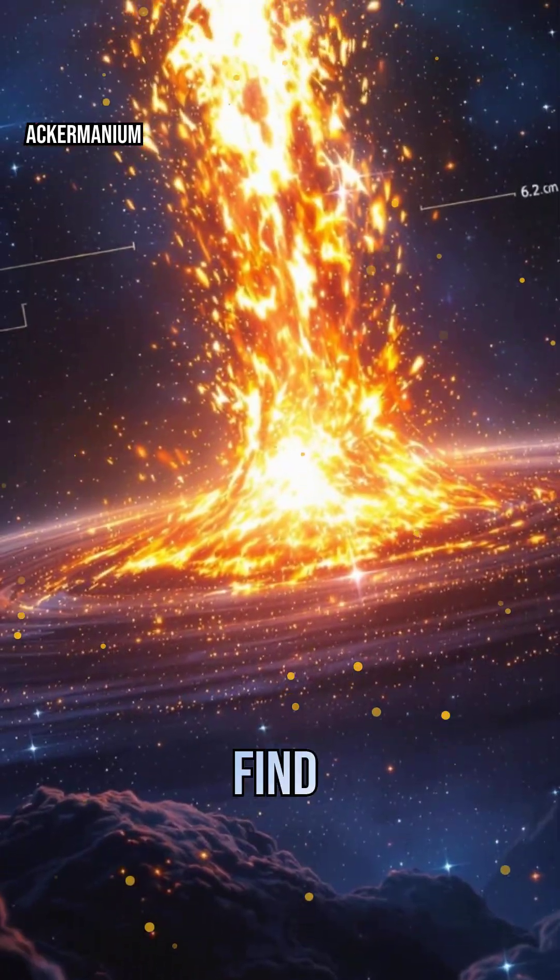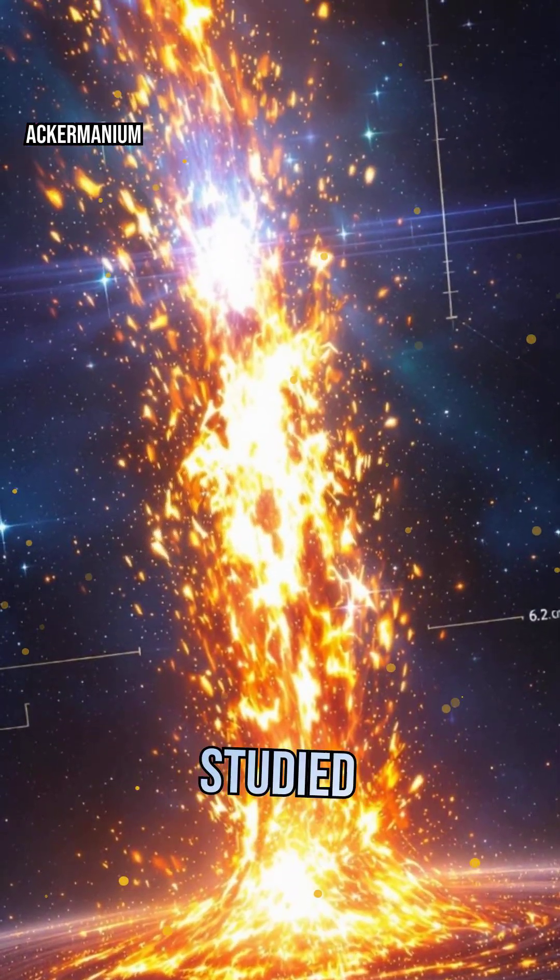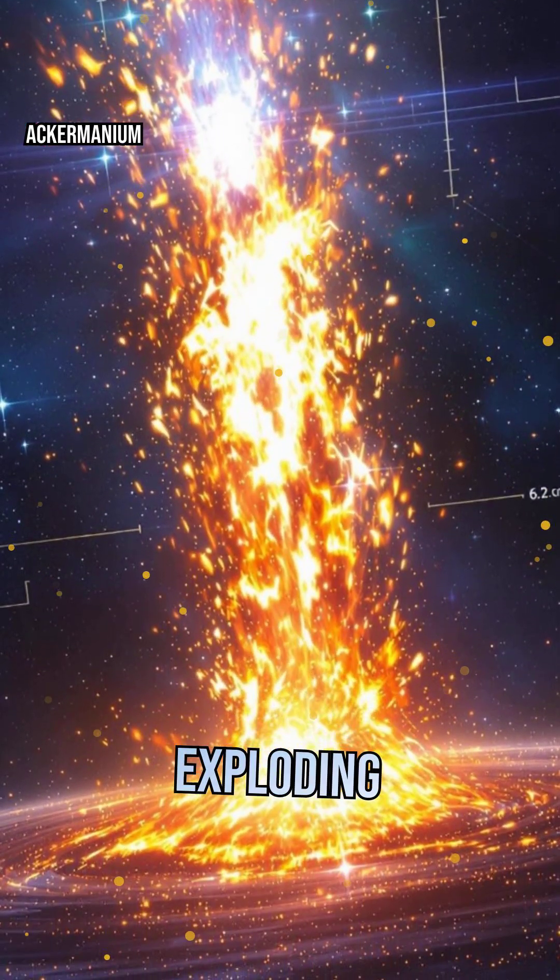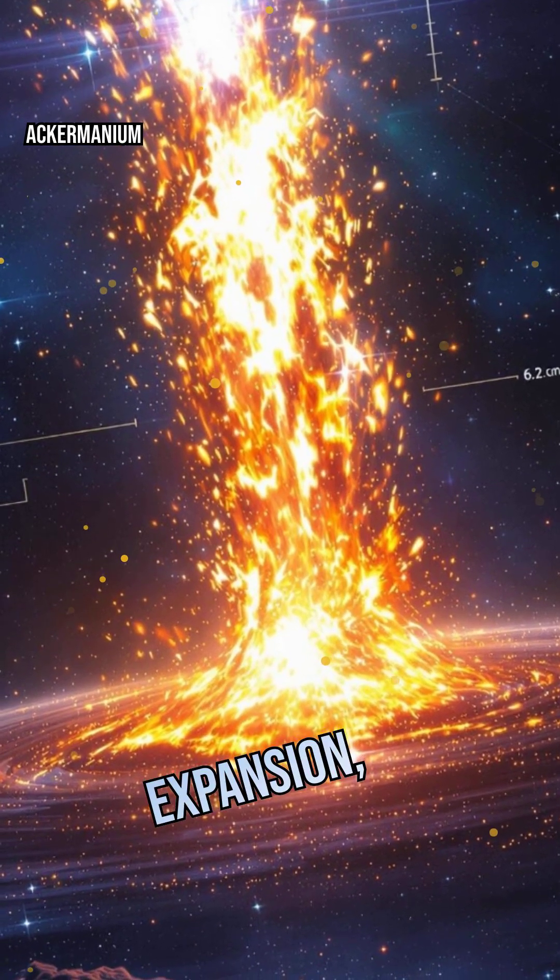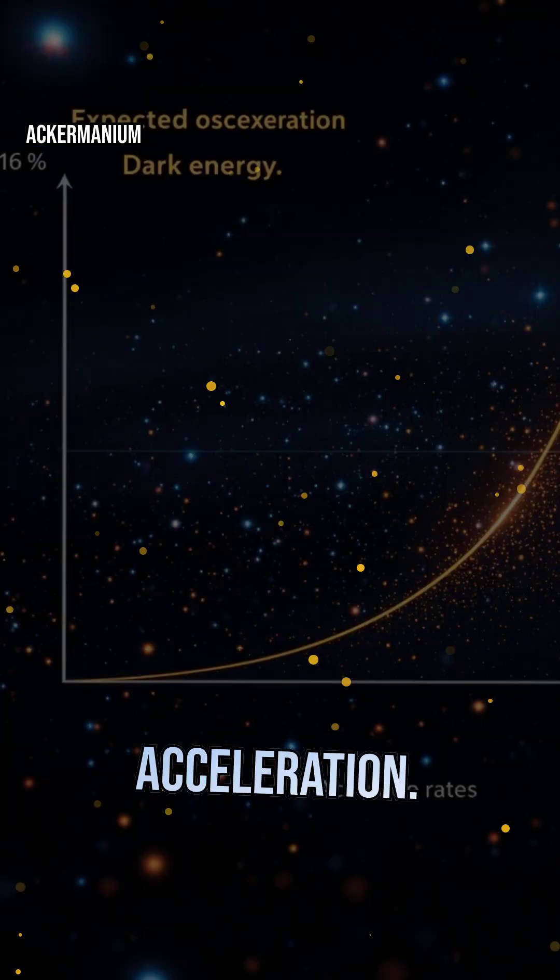So how did we find dark energy? Scientists studied distant supernovae, exploding stars that act like cosmic mile markers. They expected to see a slowing expansion, but instead, the light revealed acceleration.